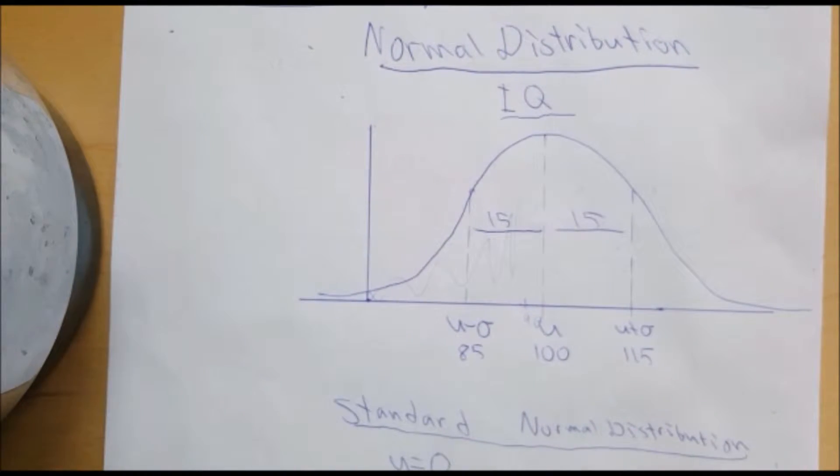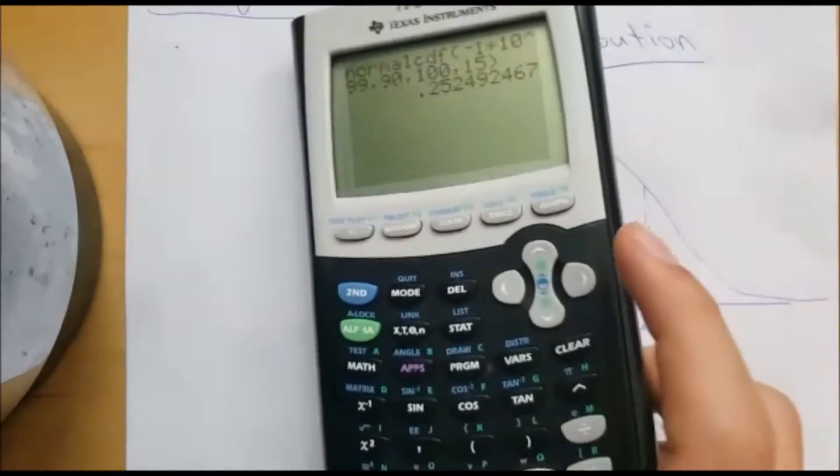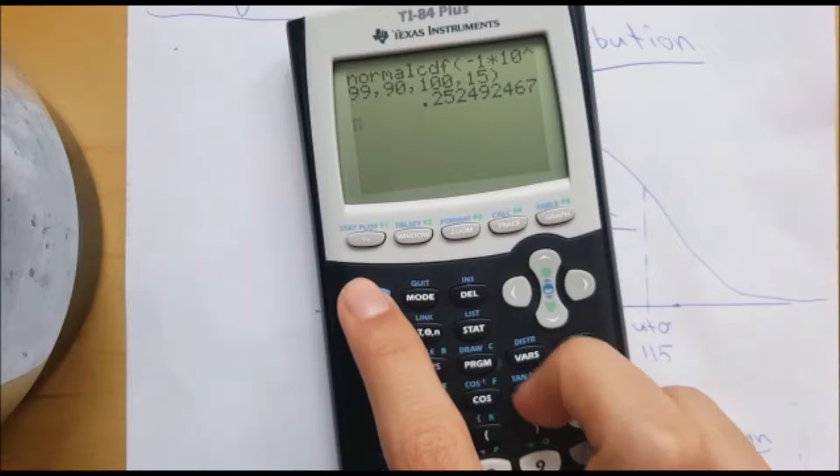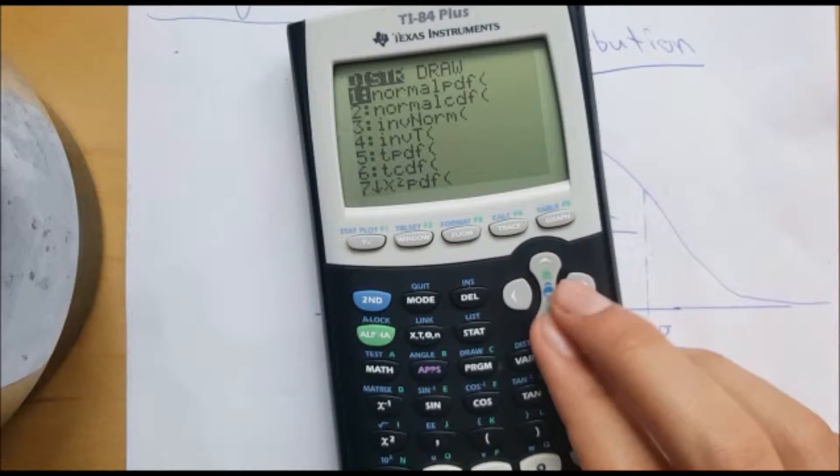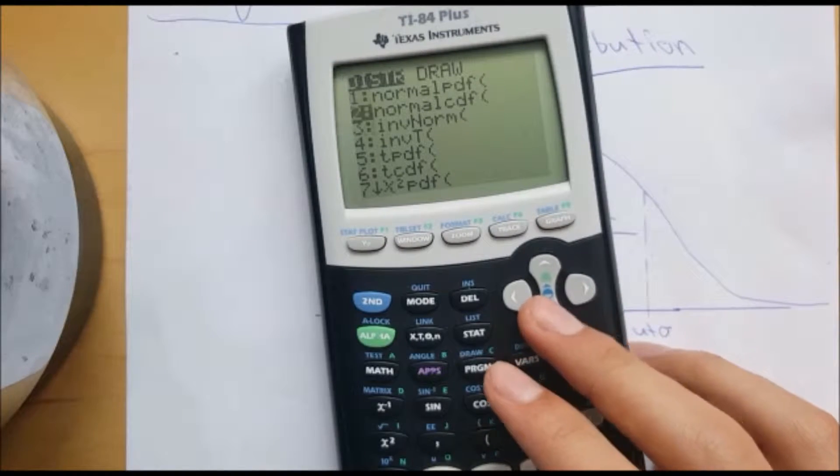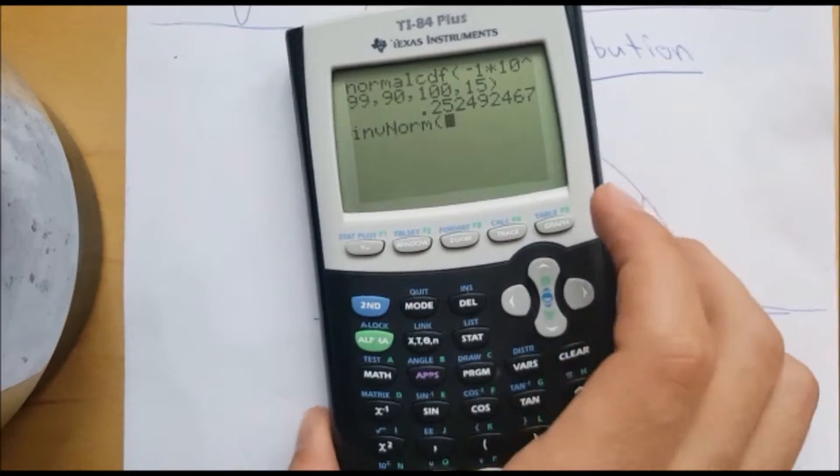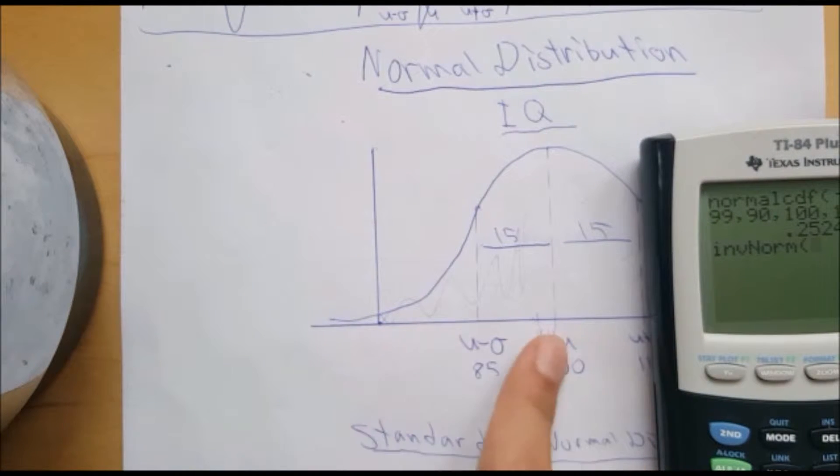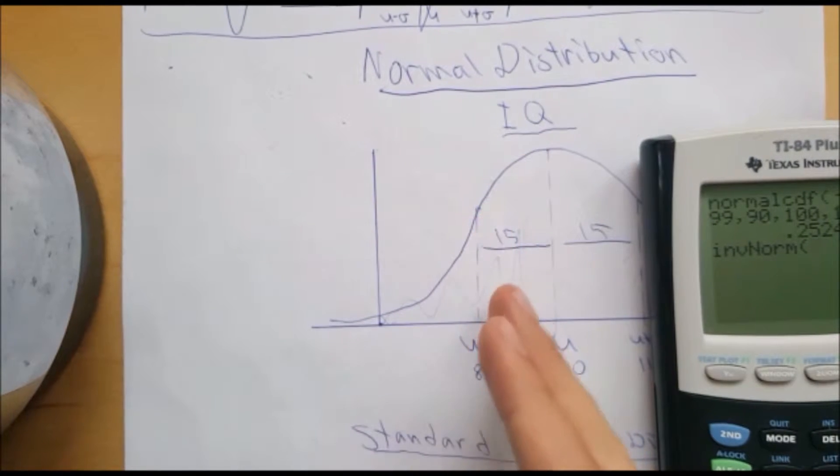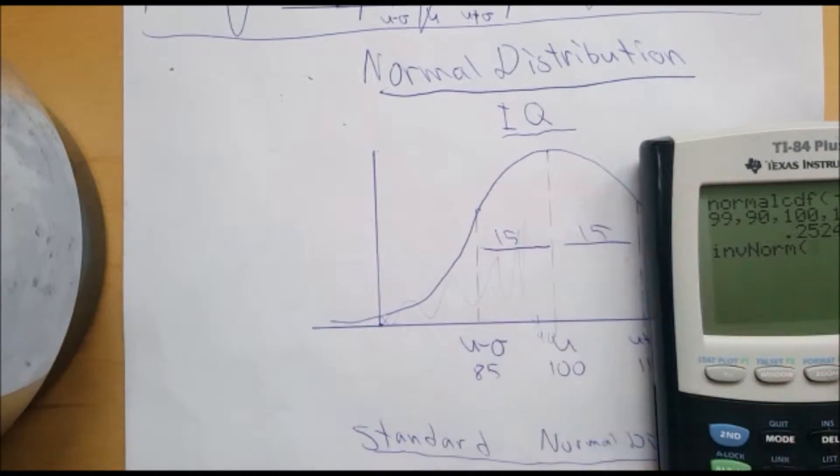There's also something called the inverse normal function on the calculator. What you do is first you go to second variables again, and then inverse normal. You can use this to find an X value of anything as long as you know the probability, you know the mean and the standard deviation.